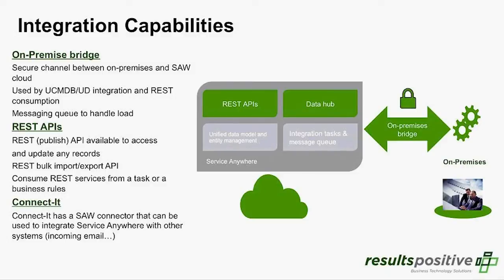The REST API capabilities can be done inside or outside the on-premise bridge — you can make and receive REST calls within Service Anywhere to generate or update records, or have Service Anywhere speak to another solution to execute a command or do a ticket exchange. There's also the Connected integration engine, historically used for large-scale batch uploads, but also applicable for LDAP integrations, single sign-on, and email integrations to open tickets from your Exchange environment.